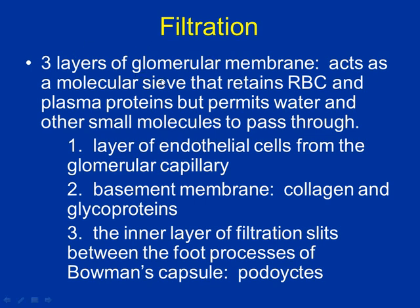Three layers: first, the endothelial cells — endothelium is always on the inside of a blood vessel, making contact with the blood — your first strainer. Second, the basement membrane full of collagen and glycoproteins, like a terrycloth or cheesecloth filter. Third, the inner layer of filtration slits. Once something gets through that cloth, there's one more layer.